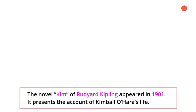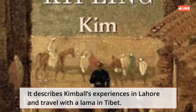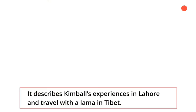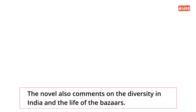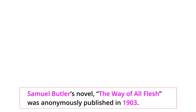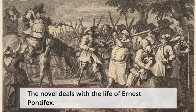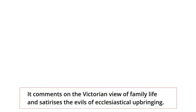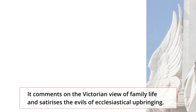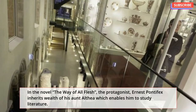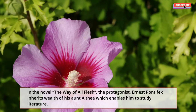The novel Kim by Rudyard Kipling appeared in 1901. It presents the account of Kimble O'Hara's life, describing his experiences in Lahore and travel with a lama in Tibet. Kimble works for a secret service under the supervision of Harry Babu. The novel also comments on the diversity of India and the life of the bazaars. Samuel Butler's novel The Way of All Flesh was anonymously published in 1903. The story is narrated by Overton and deals with the life of Ernest Pontifex. It comments on the Victorian view of family life and satirizes the evils of ecclesiastical upbringing. Ernest Pontifex inherits the wealth of his aunt Althea, which enables him to study literature and experience complete freedom from the institution of the family.